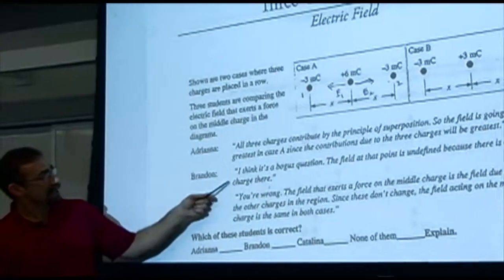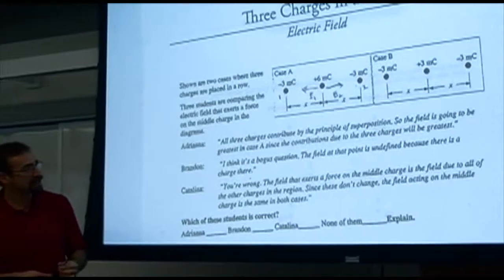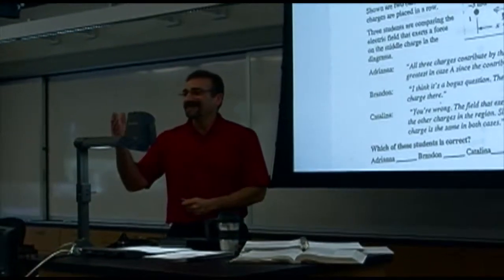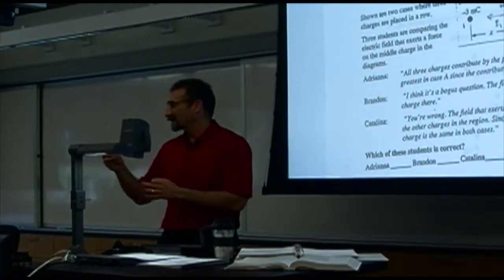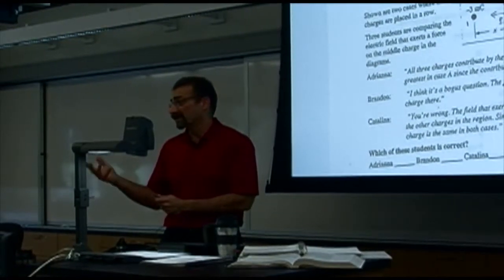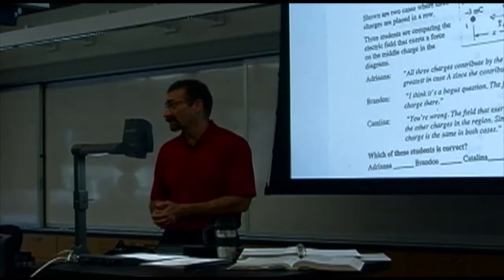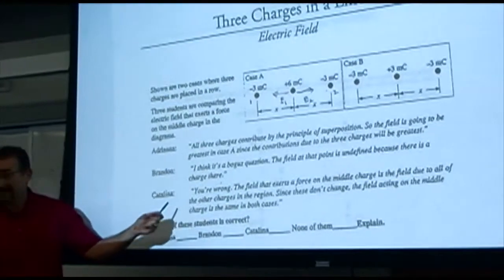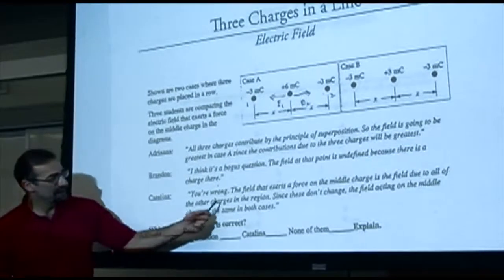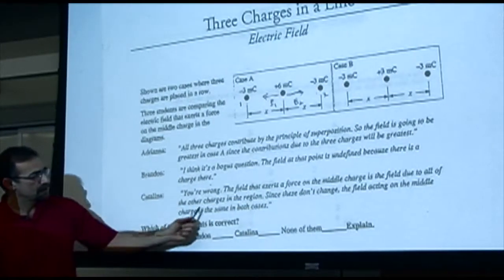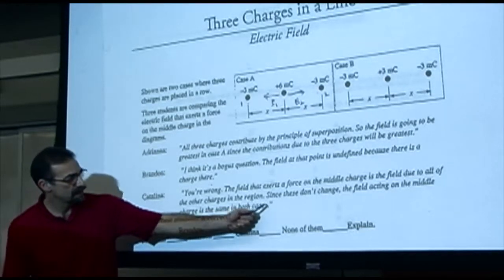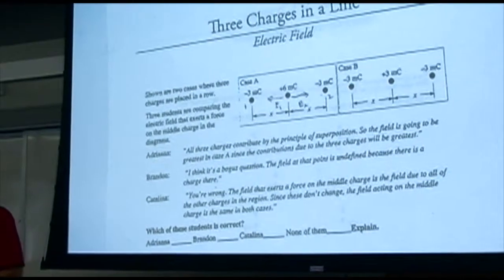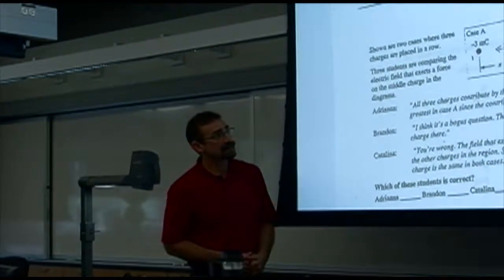Student B said the field is undefined at that location because there's a charge there. But we handle this by not including that charge — we find the electric field due to everything else, then use F = q·E to get the force on it. Student C got it right: the field that exerts a force on the middle charge is due to all the other charges, and since those don't change, the field is the same in both cases. And in fact, it happens to be zero in both cases.